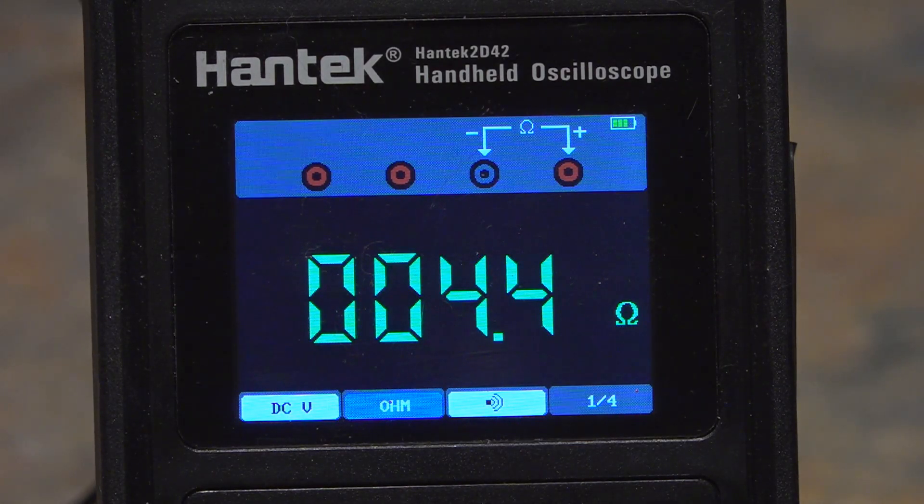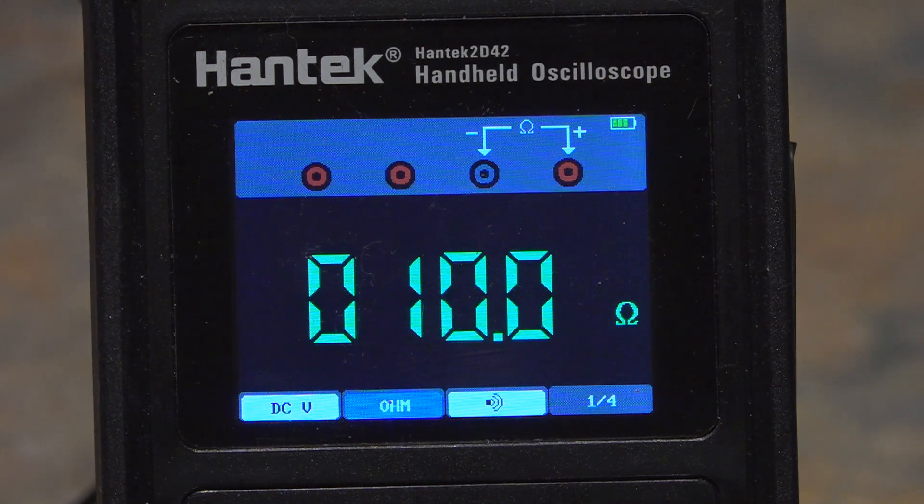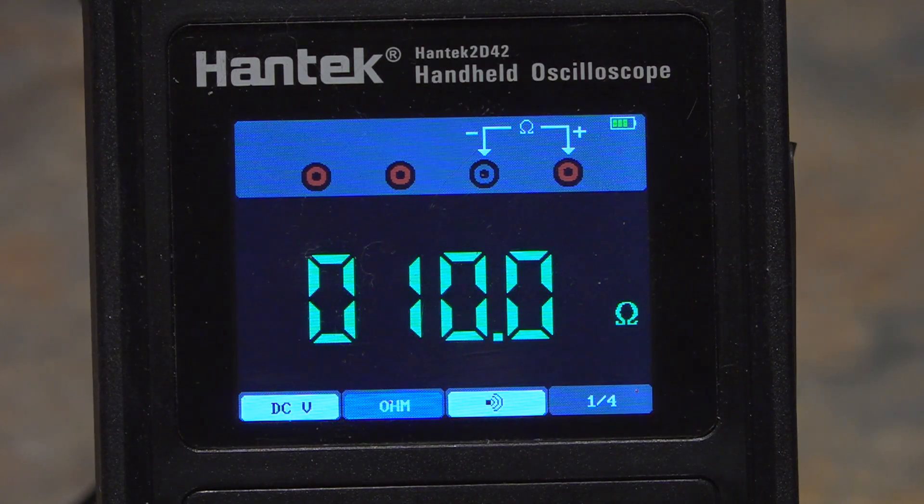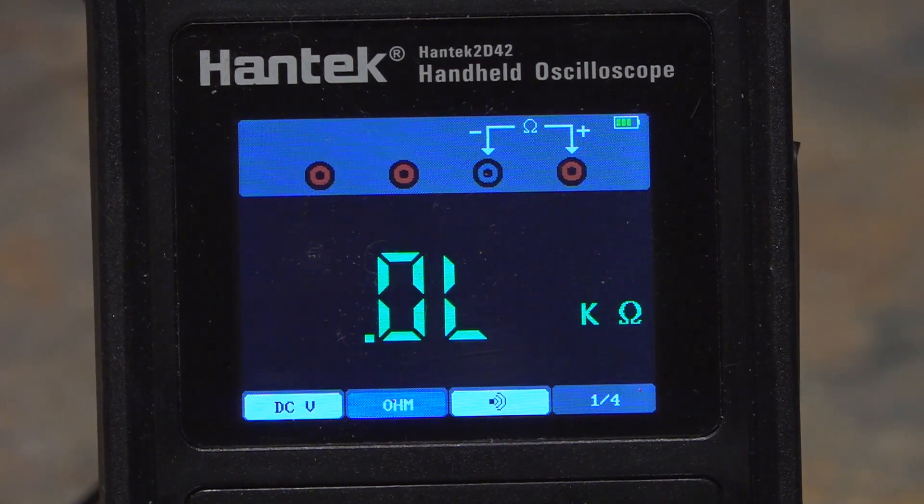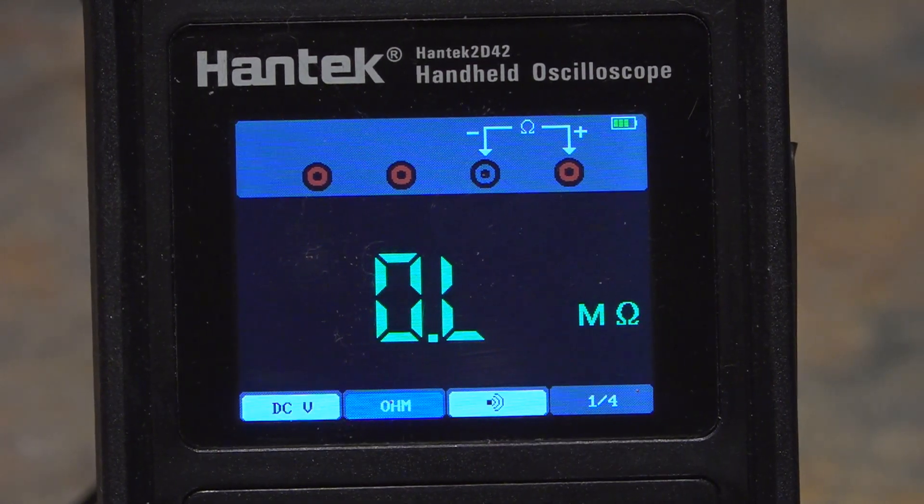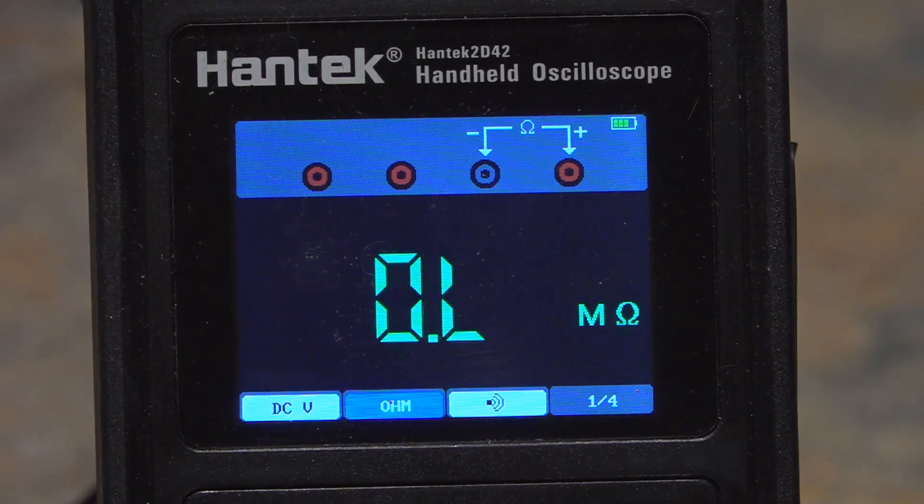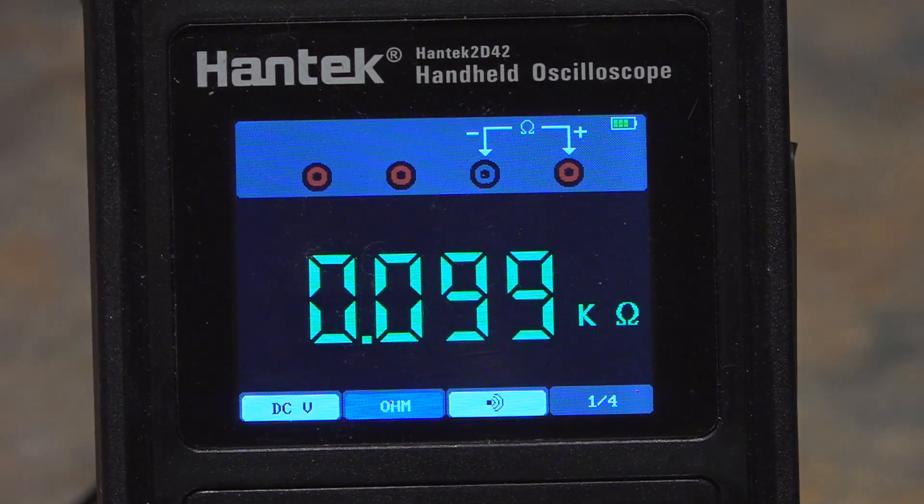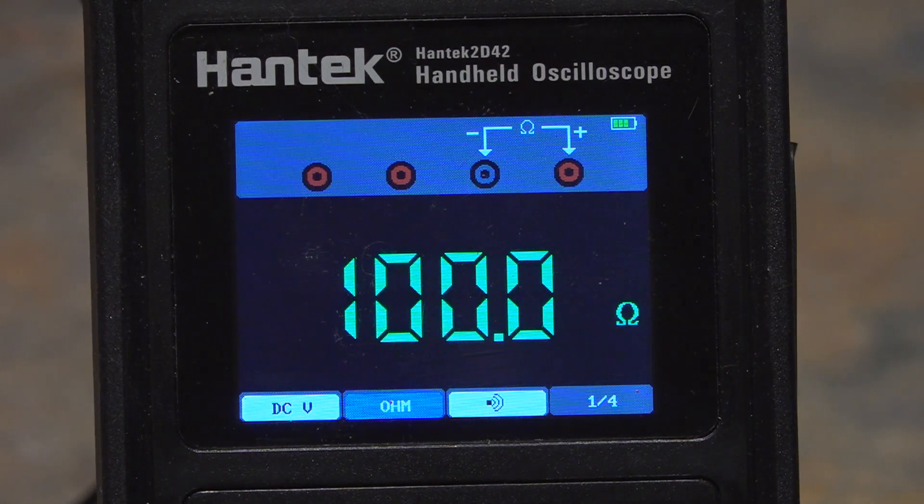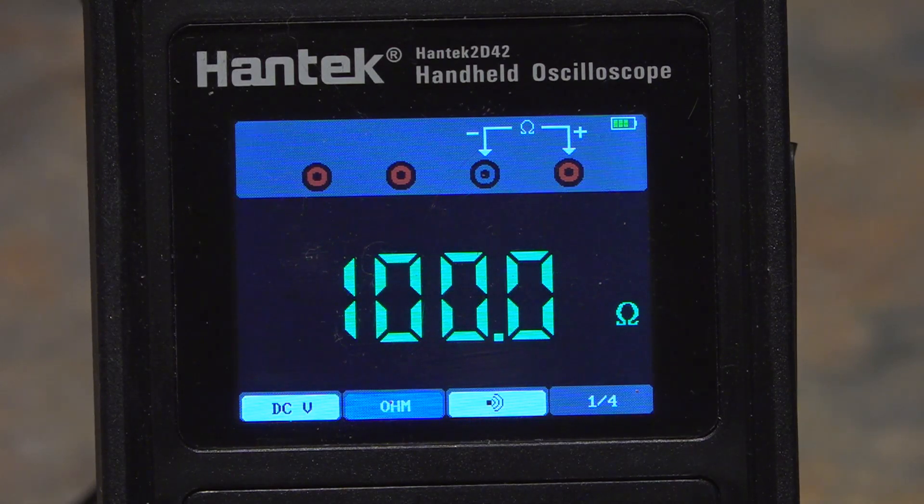The second one I have is a 100 ohm resistor, and that measures as 100.0 ohms. These resistors seem to be pretty high quality in the Elegoo kits, one percent or better.